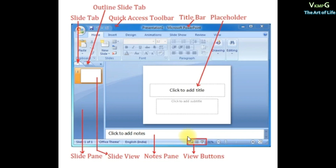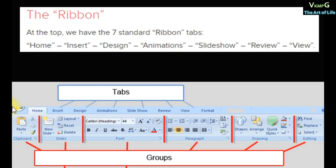In the Slide Pane, you can also add and change notes. You can change the view using the view button — Normal view, Slide Sorter view, or Slide Show. The Placeholder allows you to change the titles on a slide. In the Ribbon, you can see the ribbon tabs.